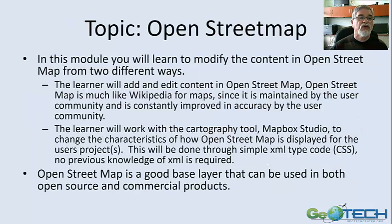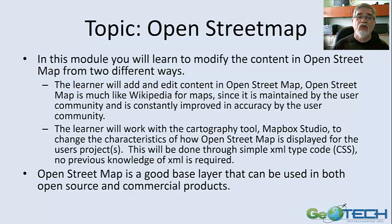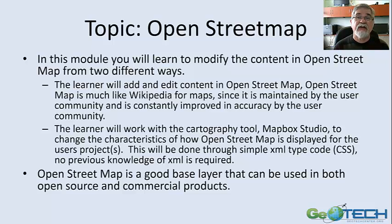We're going to be working with an open source map called OpenStreetMap. We're going to be doing a couple of different things with OpenStreetMap. One is we're going to put information on OpenStreetMap — it's like the Wikipedia of mapping. We're going to be able to add points, roads, and polygons to a map, and after we add that information it will come live so that other people will be able to see it and actually use it. So we're actually changing a national and world map.